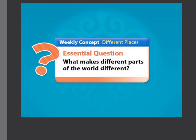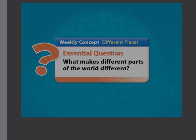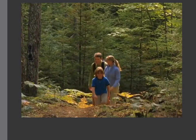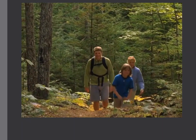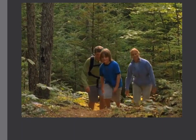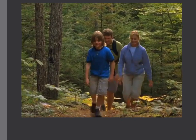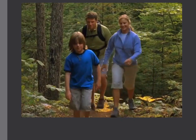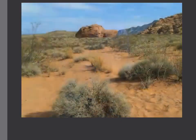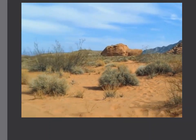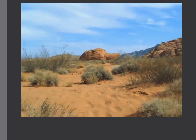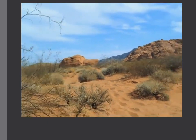Different places — what makes different parts of the world different? The world has many different regions. Plants and tall trees grow well in this forest's mild climate. These hikers are enjoying the region's beauty. You won't find many hikers here in the desert though — only a few animals and plants are able to survive the hot, dry conditions of this region.